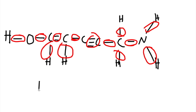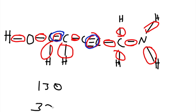So for this we have thirteen Sigma bonds. Now let's count the Pi bonds — any double or triple bonds. We have a double bond over here, that's one Pi bond, and over here we have a triple bond, so that's two Pi bonds. One plus two is three, so in total we have three Pi bonds.